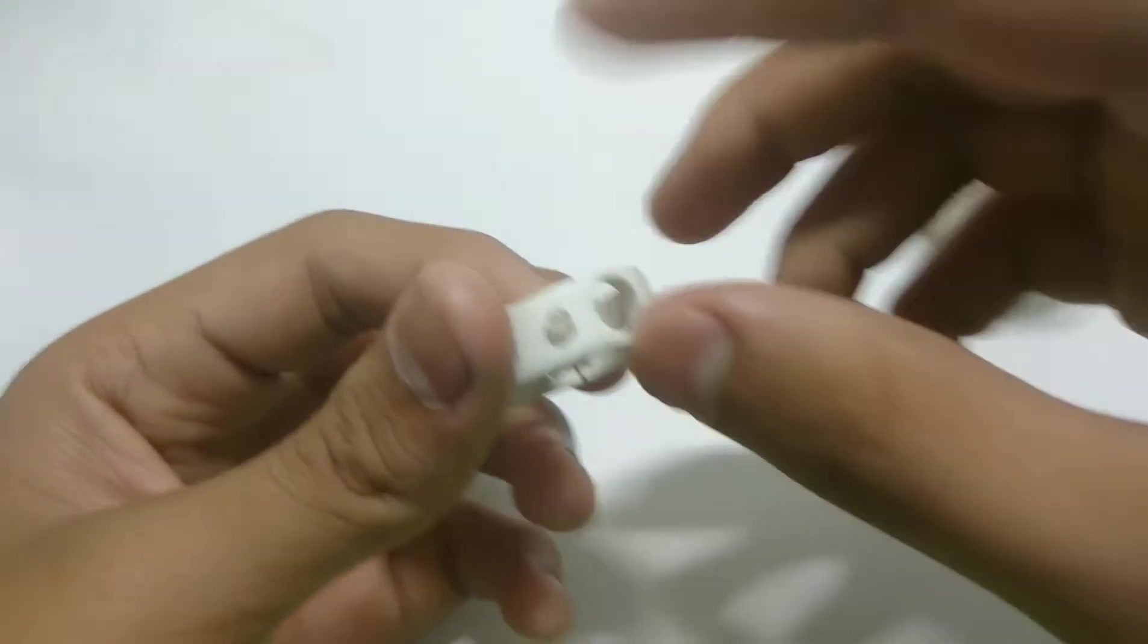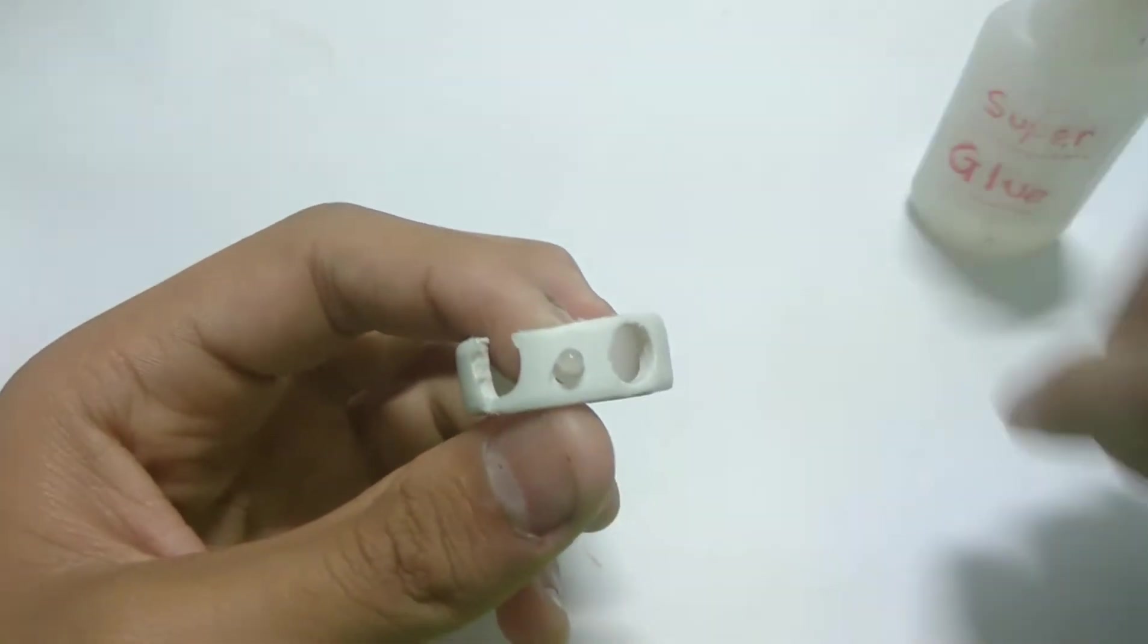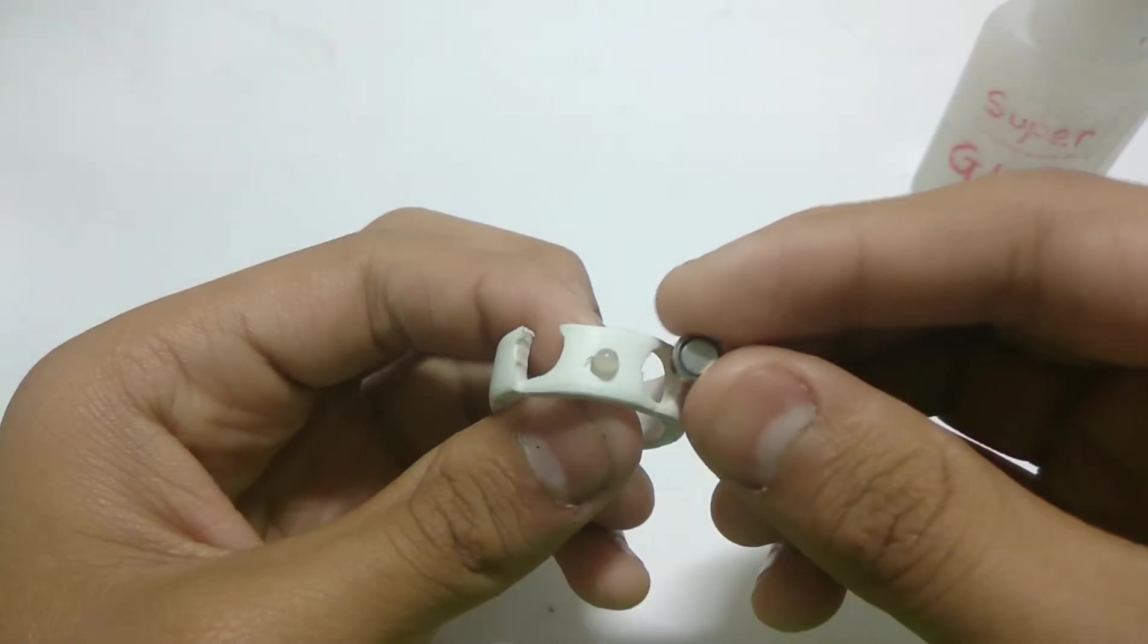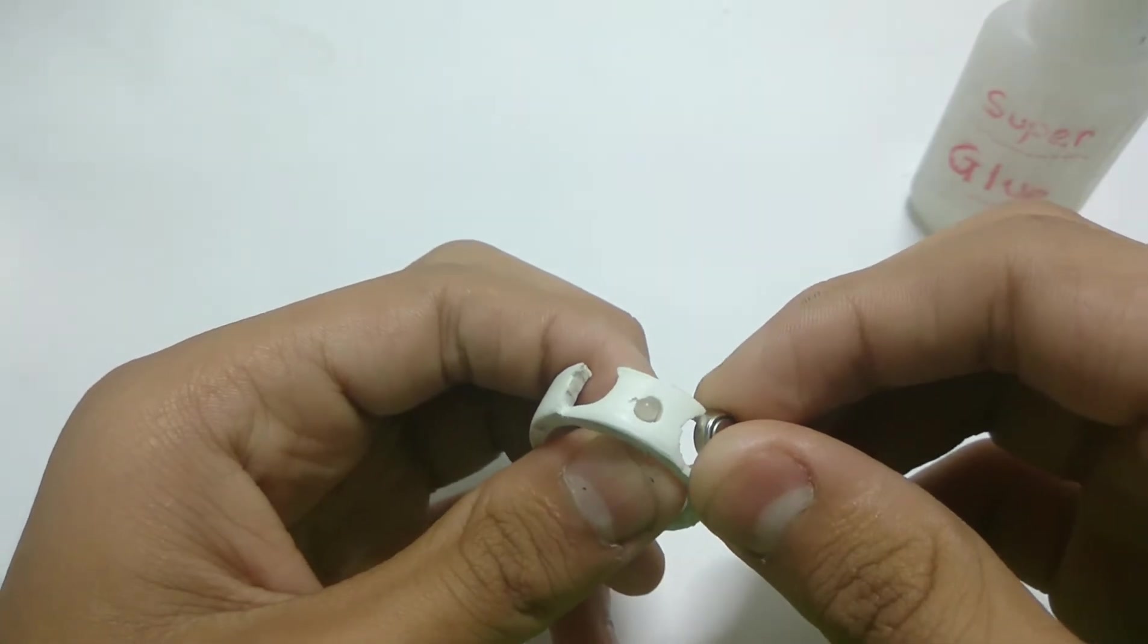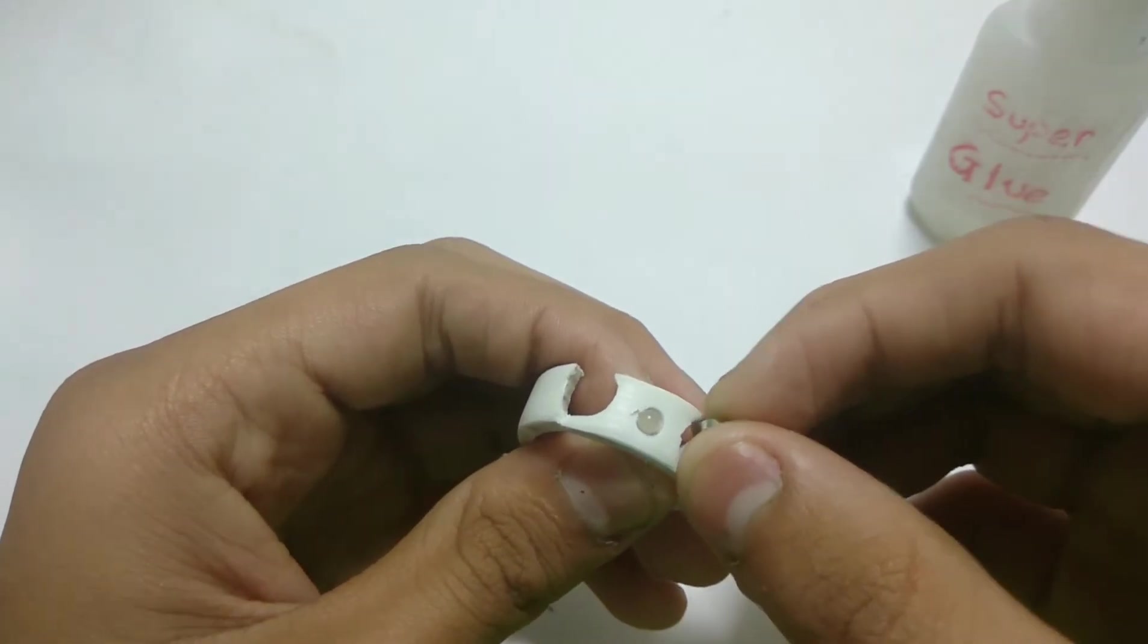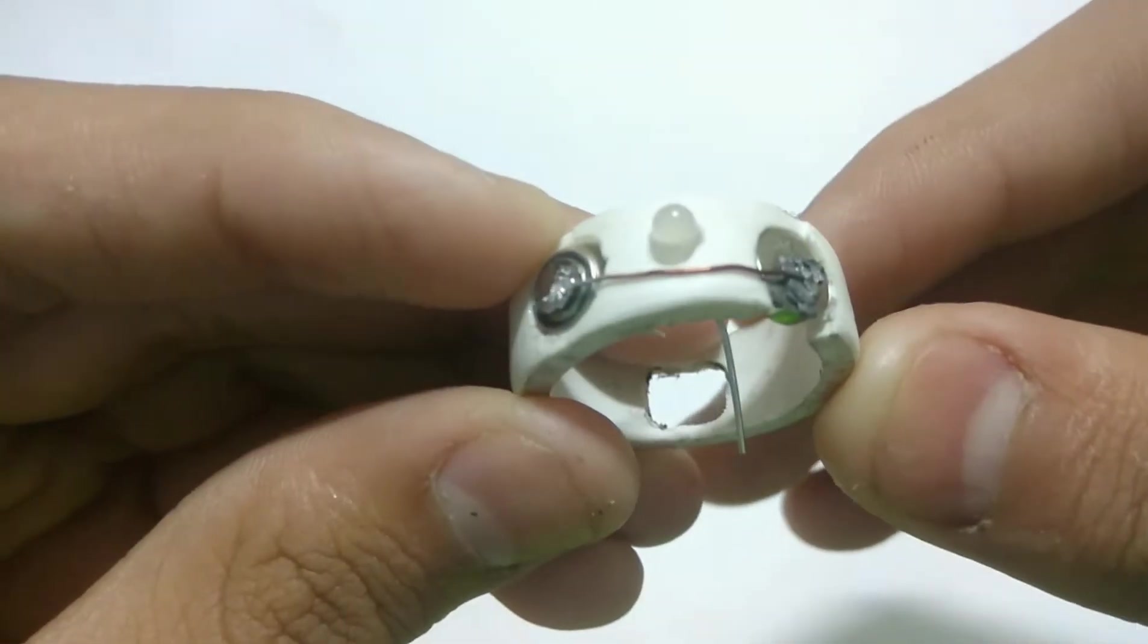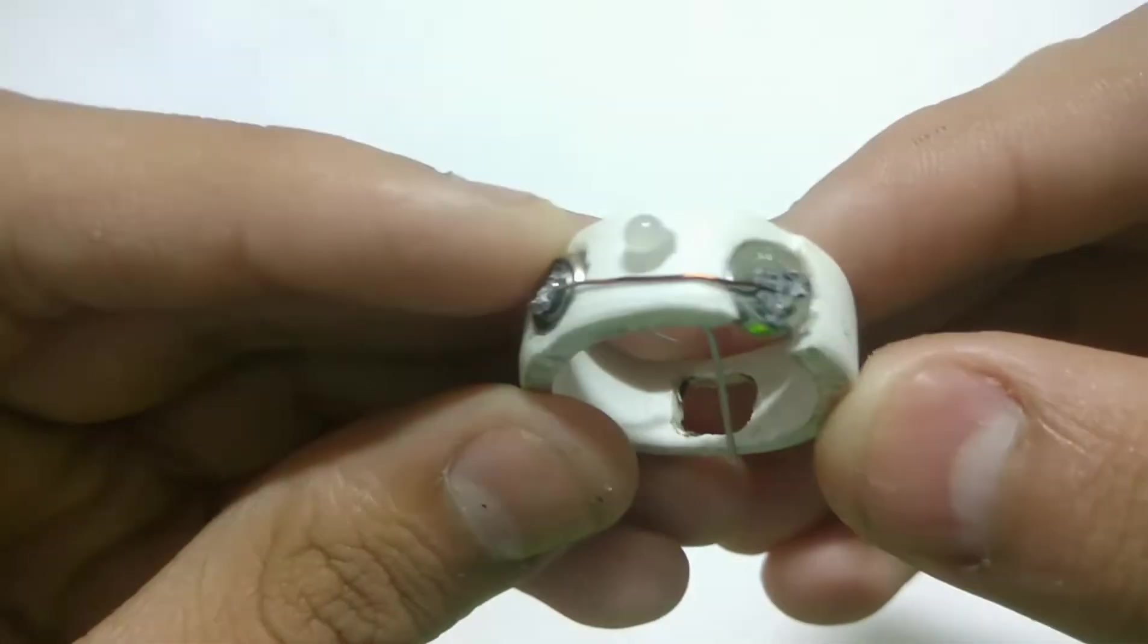So now as you can see our LED is secure and we'll be fixing the small batteries right here and right here. So let's stick them. Hello friends, now as you can see I will stick these cell batteries. This is the positive side and this is the negative.